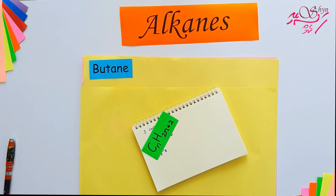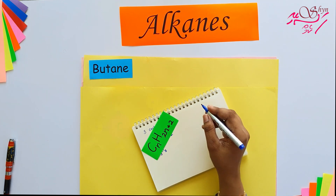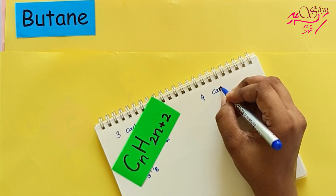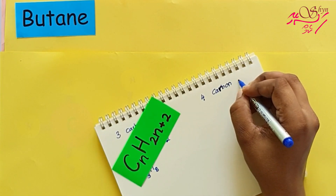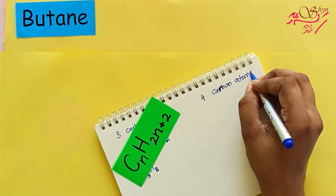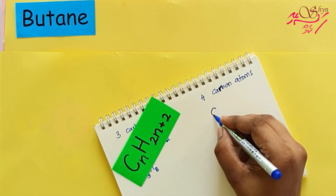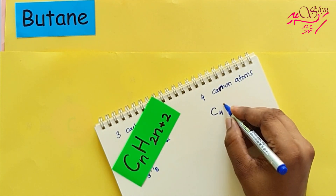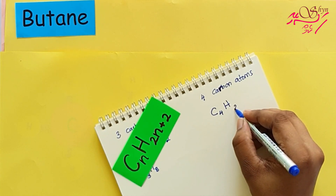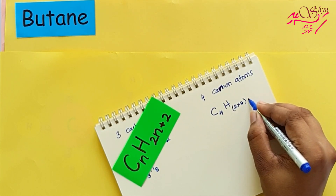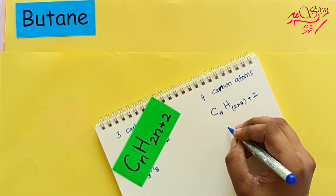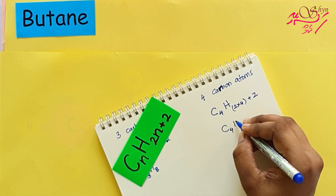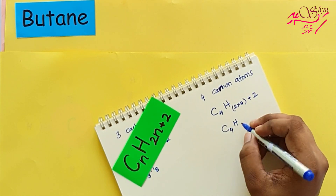I hope you got hold of this. Now pause the video and try to find the molecular formula of butane. Butane has 4 carbon atoms. Using the formula: C₄H₂⁽⁴⁾₊₂, so 2 multiplied by 4 plus 2 gives H₁₀. The molecular formula is C₄H₁₀.